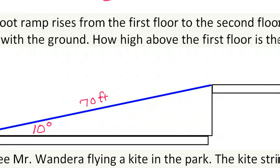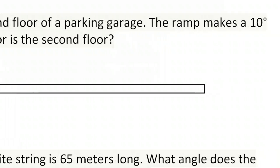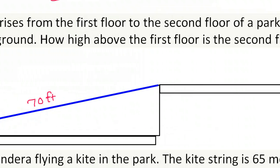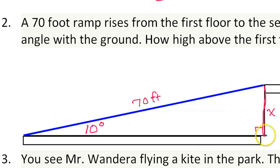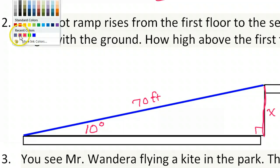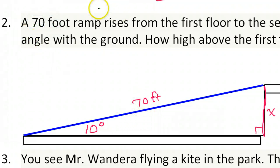When they ask how high above the first floor is the second floor, we're talking about this distance right here, this side of the triangle. So this would be a good chance to use our trig functions. What do you think? Are we thinking tangent, sine, or cosine? Well, x is opposite from the 10 degrees and 70 is the hypotenuse. So opposite and hypotenuse, that's the sine function.